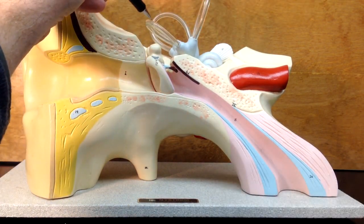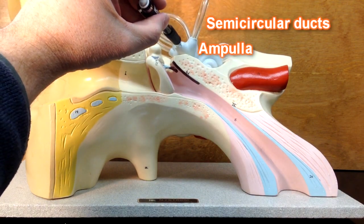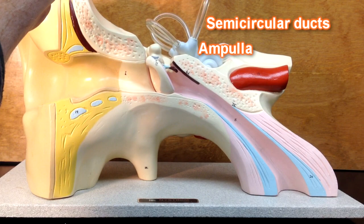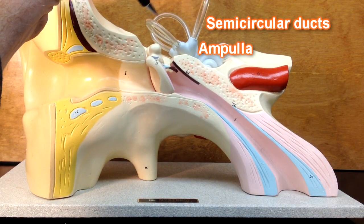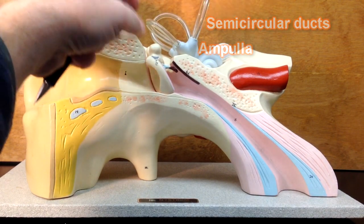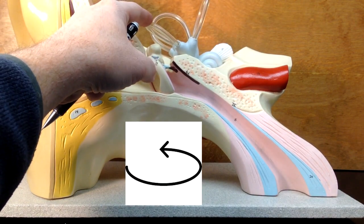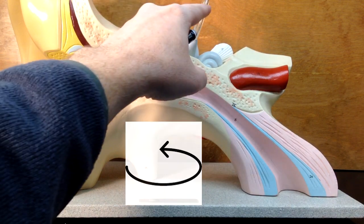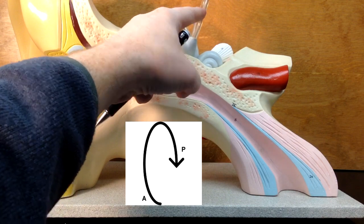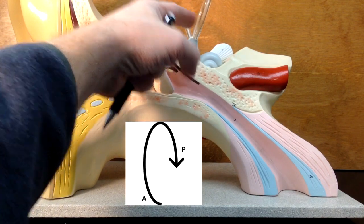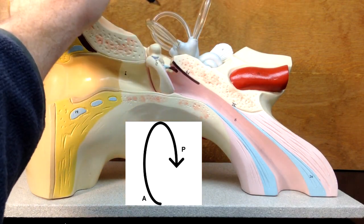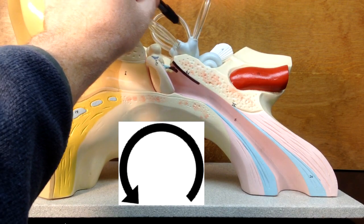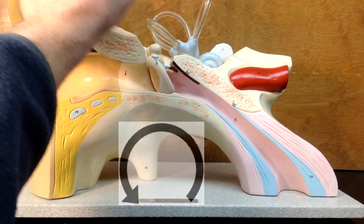These semicircular ducts with the ampulla at their bases are going to be able to detect rotational movements of the head. This one will be able to detect rotational movements if we were to say no, this would detect rotational movements if we were to nod our head yes, and this one over here would detect rotational movements of the head if we were to lateral flex from side to side.